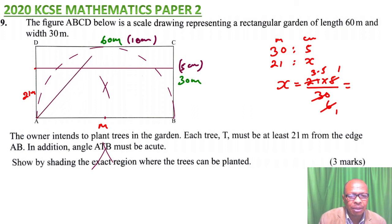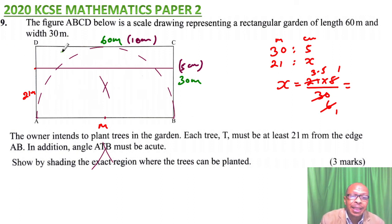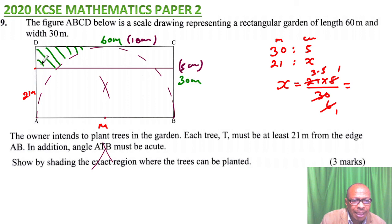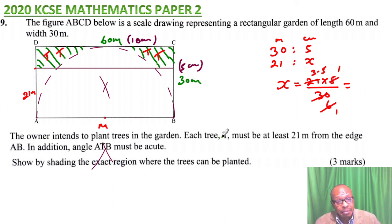Any point inside the semicircle gives an angle greater than 90, and any point outside gives less than 90. The angle subtended by the diameter at the circumference is 90, so any angle below — inside the semicircle — is greater than 90. The area where the trees are to be planted is this shaded region satisfying both conditions. That's how you work out this question to get three marks.